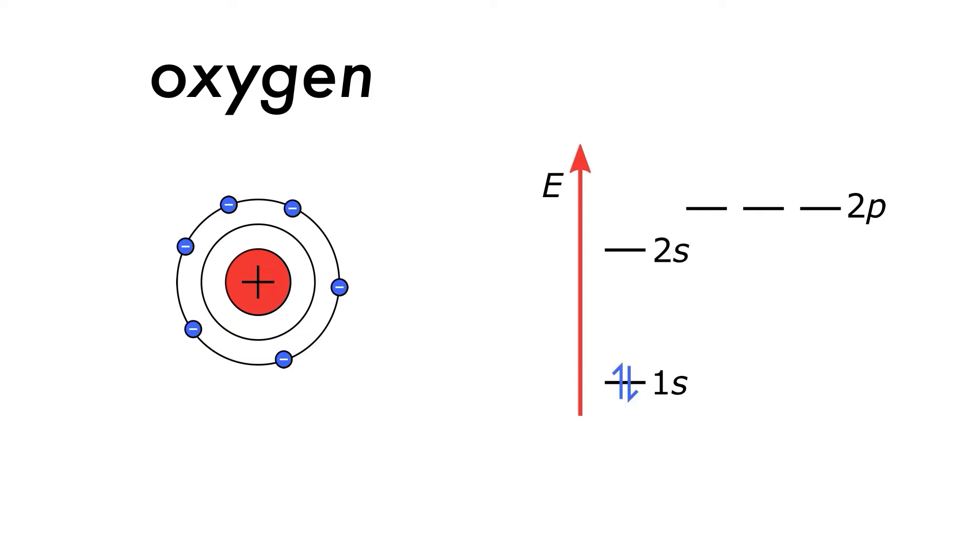First, the 1s orbital is filled with electrons, one spin up and one spin down. Next is the 2s.